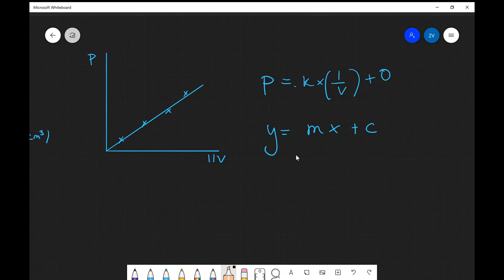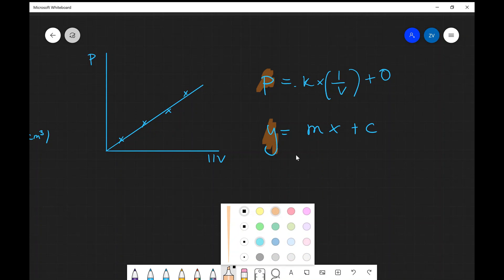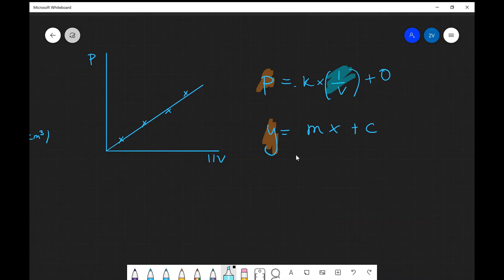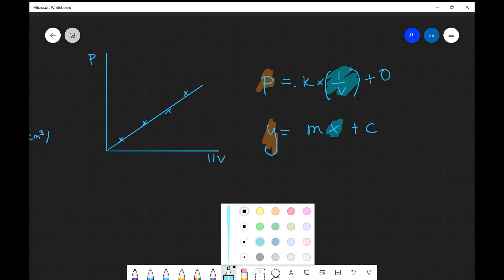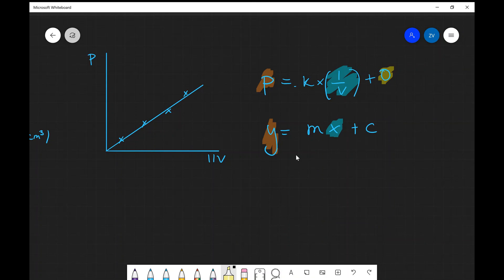We can see that the pressure is on the y-axis, and 1/V is on the x-axis. The line of best fit does go through the origin as well. So our gradient is actually going to be that constant, and we can see that our results would be consistent with Boyle's law.